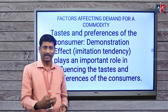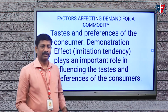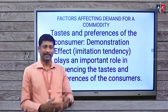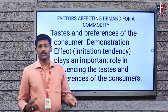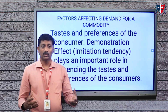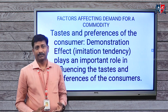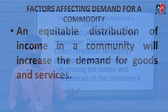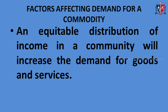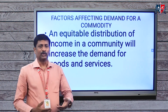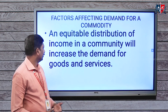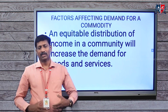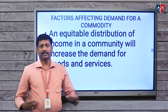Complementary goods are those goods which are used simultaneously and cannot be used separately — for example, electricity and electronic gadgets, or petrol and automobiles. When the price of petrol increases, demand for its complementary commodity, such as automobiles, scooters, or cars, will decrease. There is a positive relationship between the price of a commodity and the quantity demanded of its substitutes, and an inverse relationship between the price of a commodity and the quantity demanded of its complementary goods.